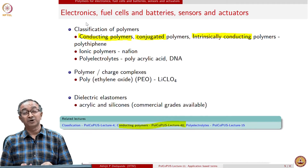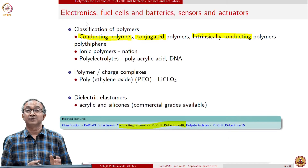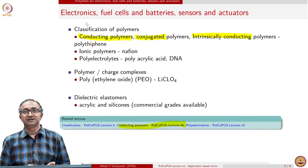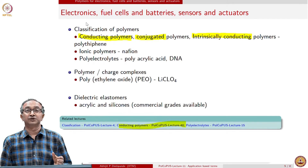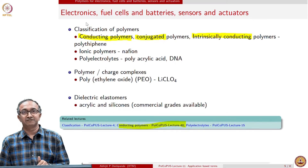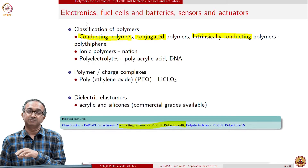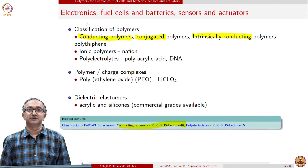An important application is in soft robotics, where we use materials which are elastomeric but can also respond to electric fields. Dielectric elastomers are an important class of materials. Commercially available acrylics and silicones can give very good performance in terms of electromechanical response. When we say electromechanical, it implies that subjecting a material to an electric field gives mechanical response, or subjecting the material to a load gives an electrical response. Dielectric elastomers are thus important examples of electromechanically active materials.